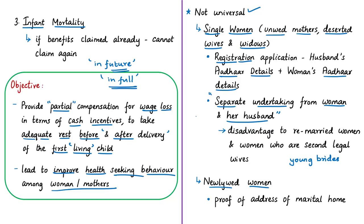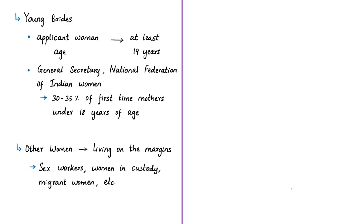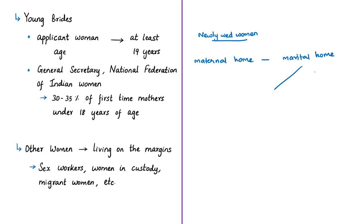Another exclusionary situation: if a woman is the second legal wife of a man who already has a living child with his first wife, she cannot avail the financial benefit even for her first pregnancy. The scheme also curtails widow remarriage. For newlywed women, the application requires proof of address, but in India, women typically move from their maternal home to their marital home after marriage, creating complexity in providing consistent address proofs across the three separate registration stages — during pregnancy, at birth, and after.